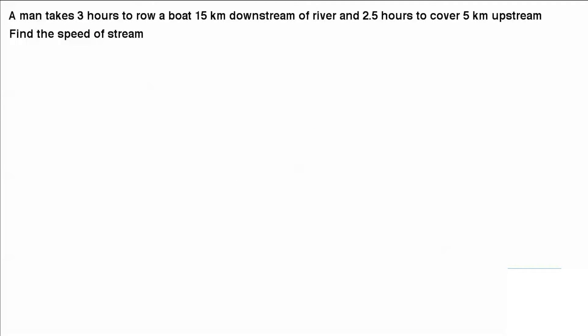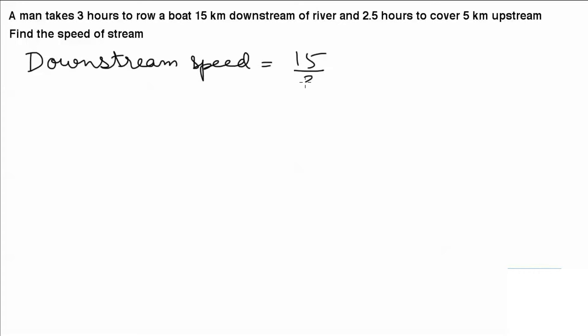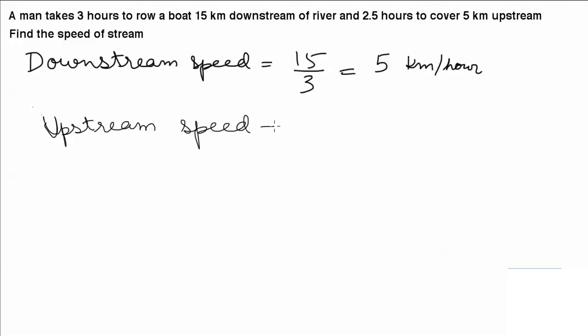A man takes 3 hours to row a boat 15 km downstream of a river and 2.5 hours to cover 5 km upstream. Find the speed of stream. First, the downstream speed comes out to be 15 km divided by 3 hours, which is 5 km per hour. And the upstream speed comes out to be 5 km divided by 2.5 hours, which is 2 km per hour.